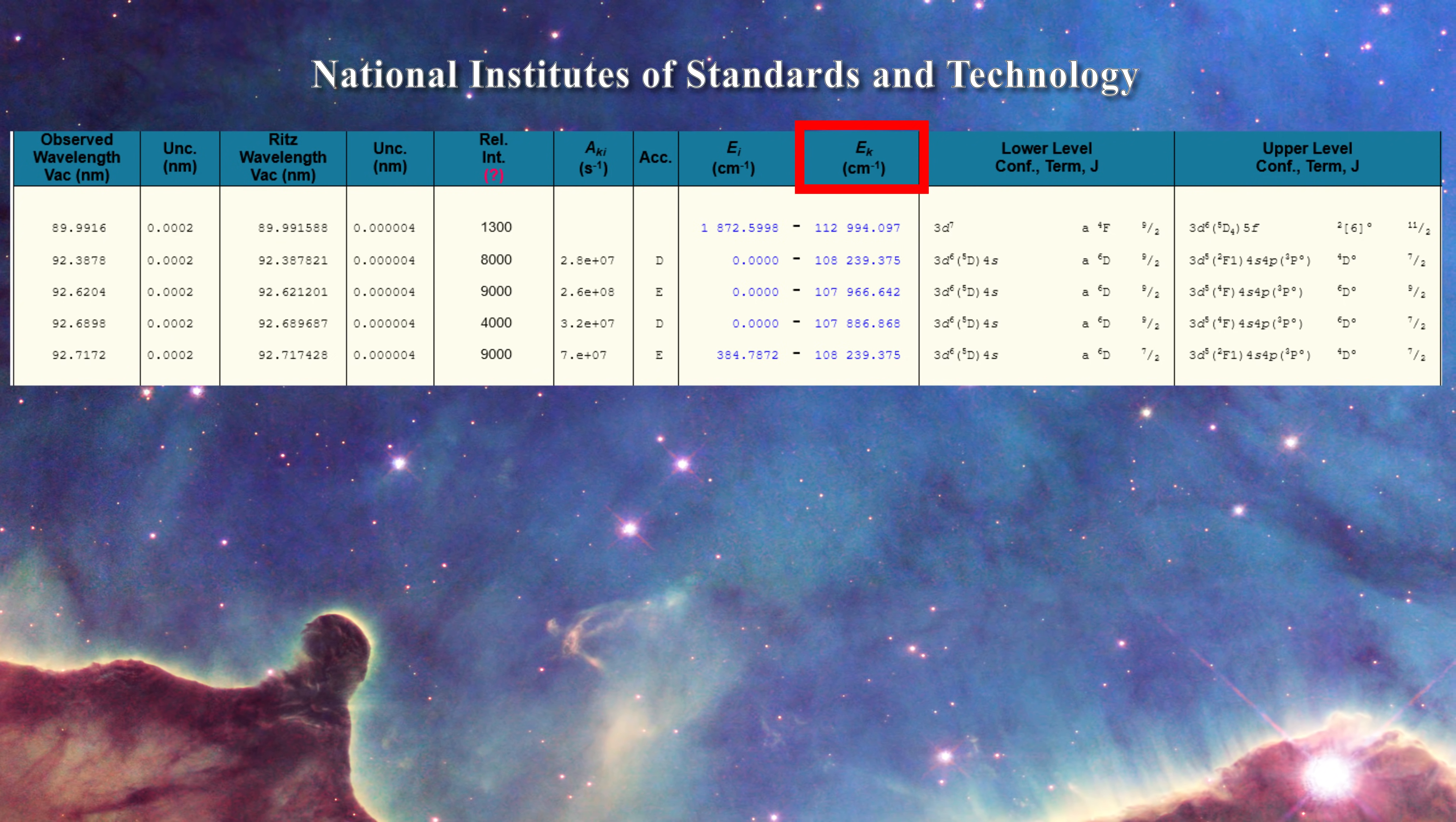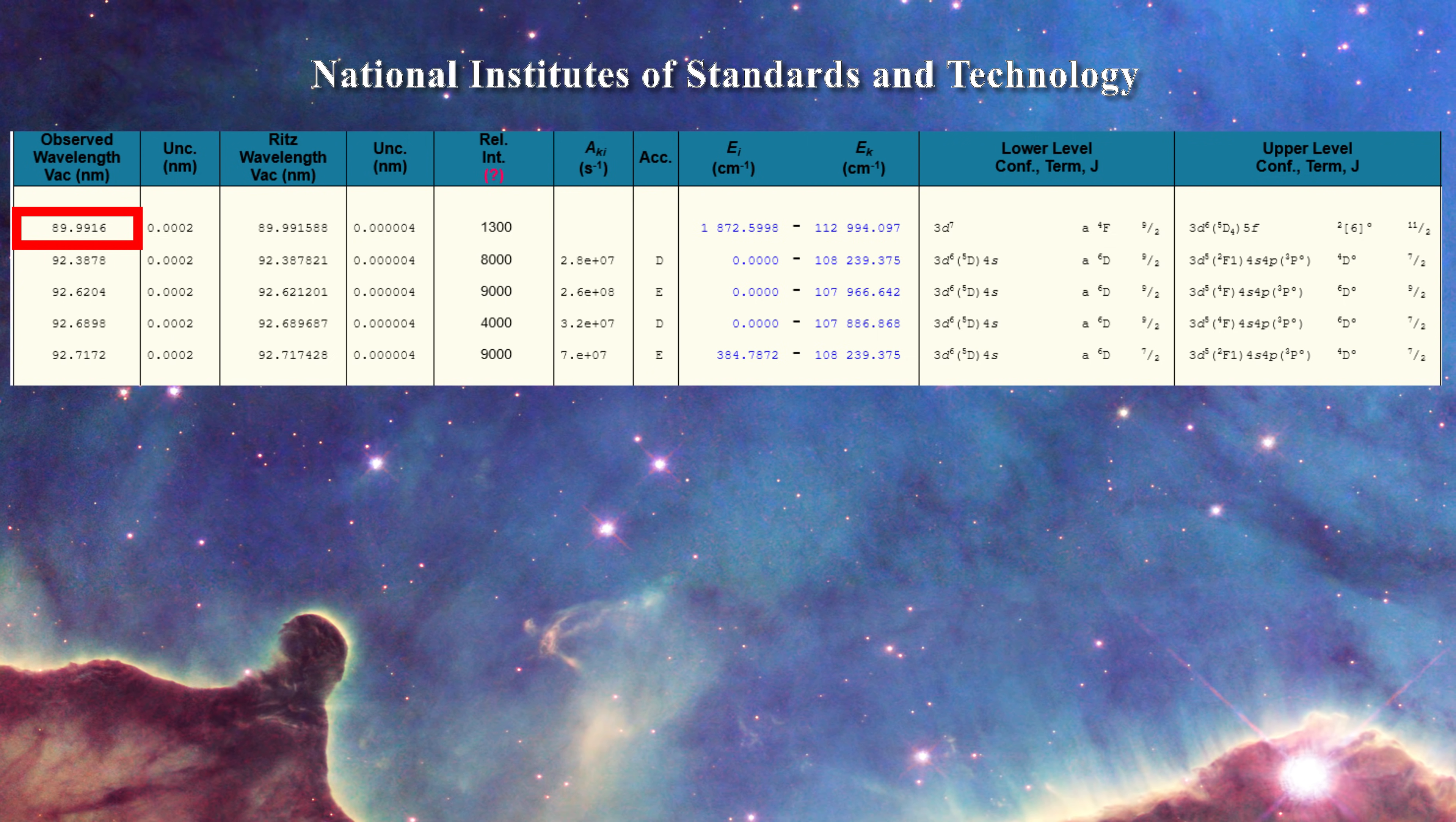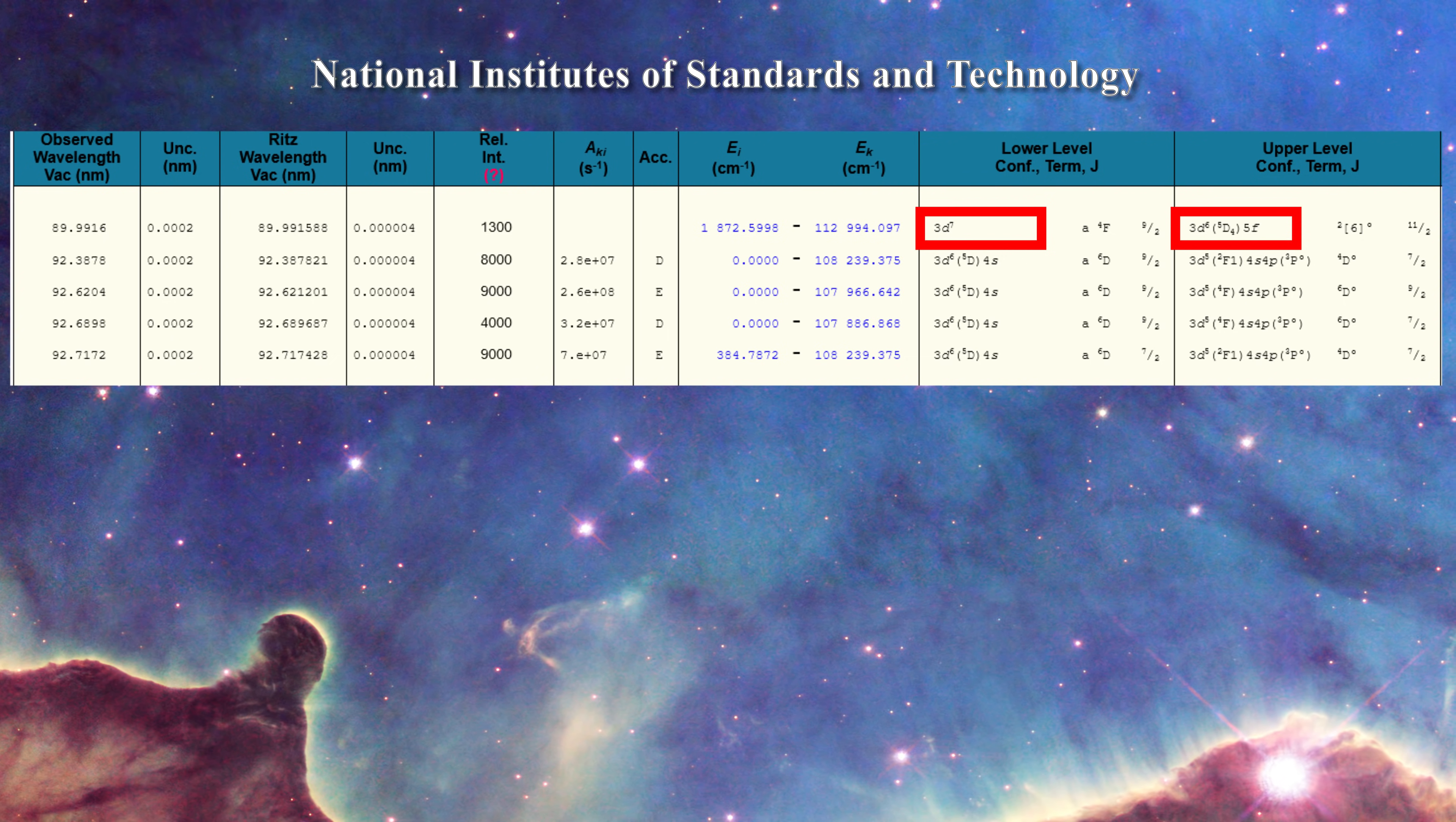Next we find two extremely important columns. They describe the electronic energy levels involved in the transition. So the first line of iron 2 in this registry emits at a wavelength of 89.9916 nm. When it does so the ion is undergoing a transition from the 3D6 5F1 state to the 3D7 state. The electron moved from an F orbital into a D orbital.